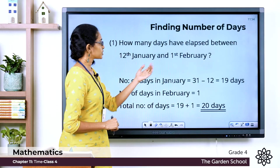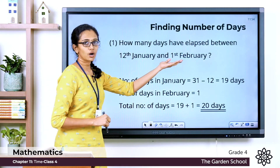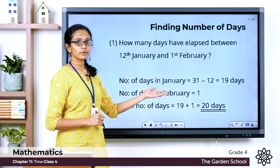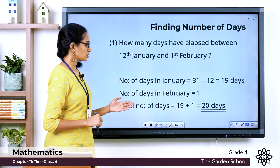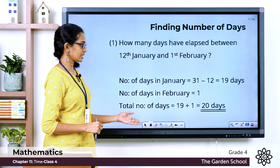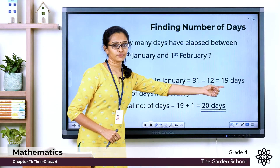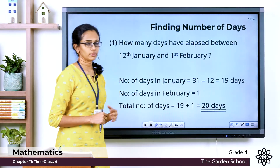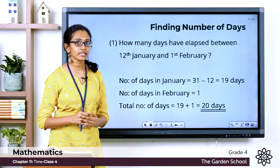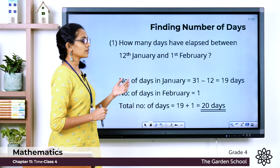Now, between 12th January and 1st February, only the first day of February is considered here, so the number of days in February is 1. The total number of days is equal to 19 plus 1 — 19 days of January plus 1 day of February — which equals 20 days. So there are 20 days between 12th January and 1st February.